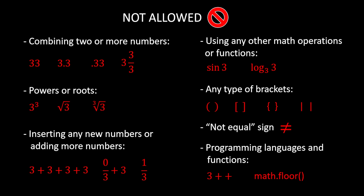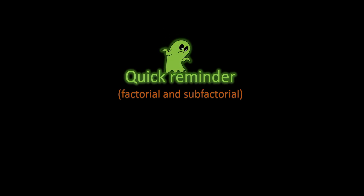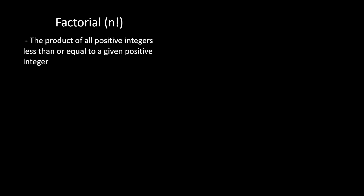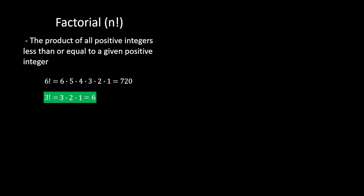Now that we've established all the ground rules, I'll use a minute or two as a quick reminder for factorial and sub-factorial functions, because a lot of people actually don't know these functions. In mathematics, factorial is marked with an exclamation point after a natural number, and we define it as the product of all positive integers less than or equal to a given positive integer. For example, 6! = 6 × 5 × 4 × 3 × 2 × 1 = 720. For us, the more interesting one is 3! = 3 × 2 × 1 = 6. Remember this value — we'll use it in our challenge.